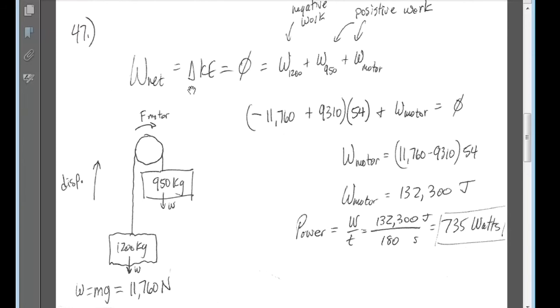I know that the net work is equal to the change in kinetic energy. So there are three forces at work here: the force of gravity on the counterweight, the force of gravity on the elevator, and the force of the motor.